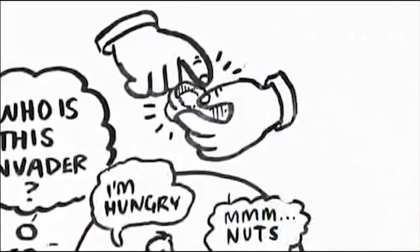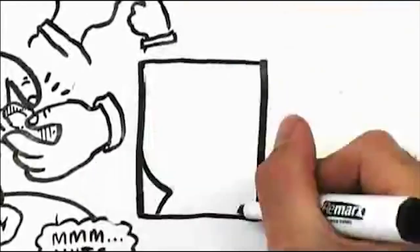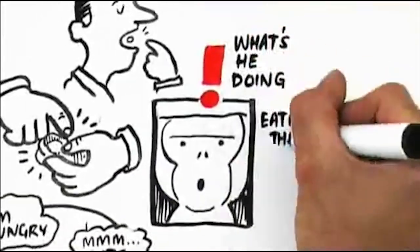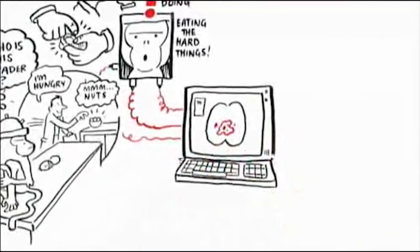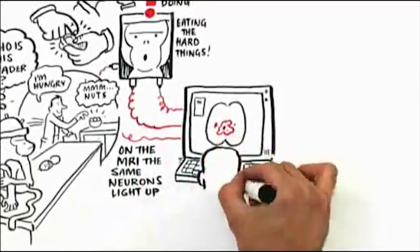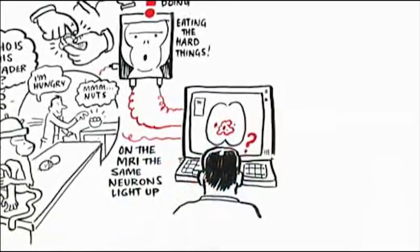The macaque monkey was totally shocked because who was this invader in his laboratory? And he didn't move. He just gazed at this human trying to open up the nut, just like he had done a few seconds earlier. And then the scientist looked on the MRI brain scanner, the same exact neurons were lighting up when he observed the human being opening the nut as when the monkey opened the nut.